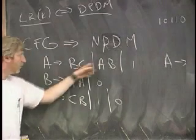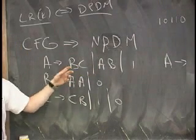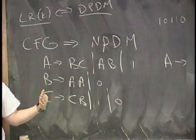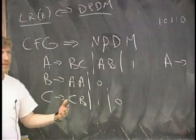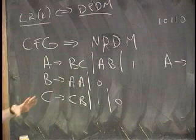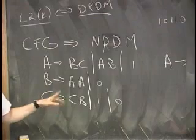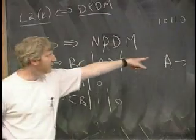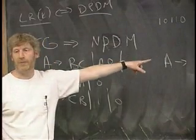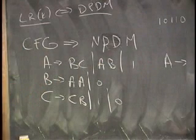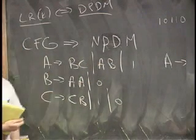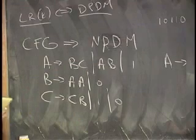Let's do a leftmost derivation. In other words, as we guess which one of these to start with, we will always substitute for the leftmost non-terminal symbol that's still sitting. So, let's begin. What do you want to start with, BC or AB? AB. All right.